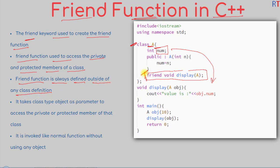First, we declare one friend function inside the class definition with a semicolon at the end. Then we must define the friend function outside of any class definition. It takes a class type object as a parameter to access the private or protected members of that class. The friend function always takes one object as a parameter, and then we use that object to access the private member of the class.